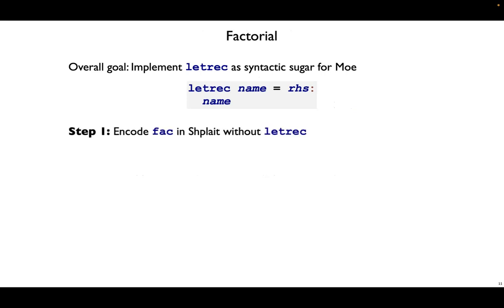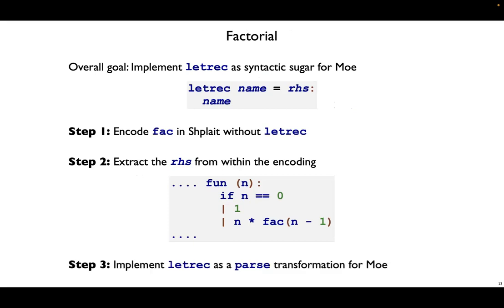There's going to be three steps. Step one: encode fac in Shplait without using letrec. At the end of step one, we're going to have a big encoding. So step two is going to extract the right-hand side from within that encoding, the kernel inside that gives us factorial. And then step three is to put everything together, implement letrec as a parsing transformation for Moe.